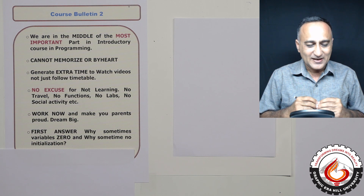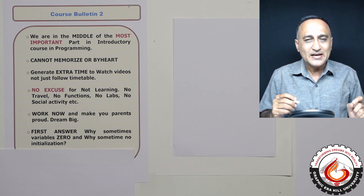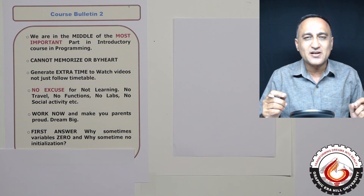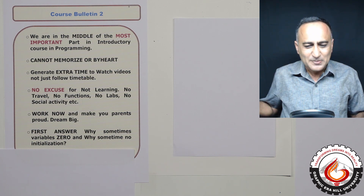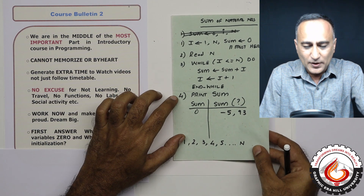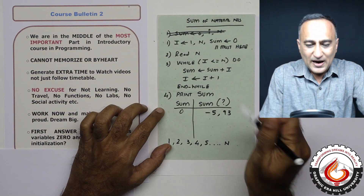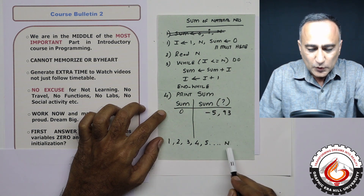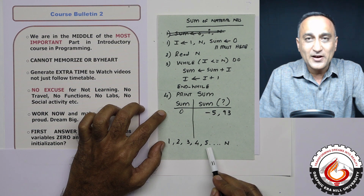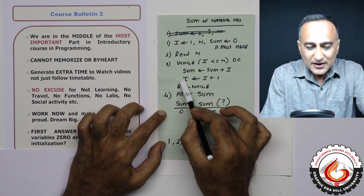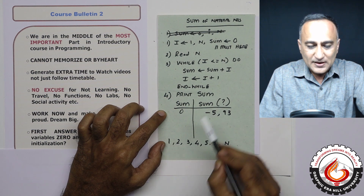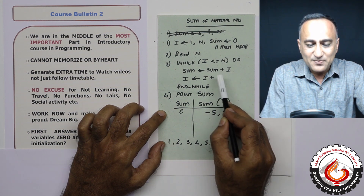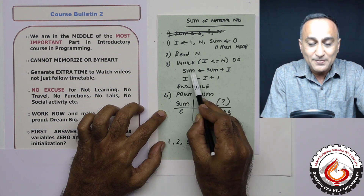Coming back to the topic, I'll first try to answer a question probably a lot of you have in your mind: why do I sometimes take a variable as zero, and sometimes give a variable some initial value like one, or sometimes not give any value at all? I'll explain with a very simple example. Here I'm trying to find the sum of natural numbers between one to n. Suppose the user enters n as five. Initially, I'm giving sum as zero because the first time when i is one, sum should be zero plus one. Next time sum is one, one plus two, so sum becomes three.